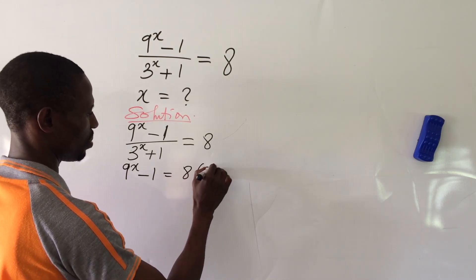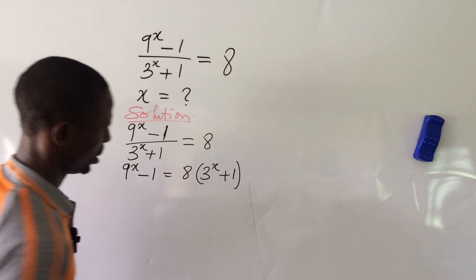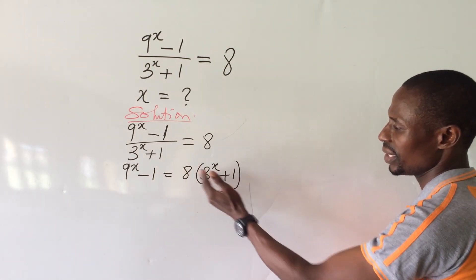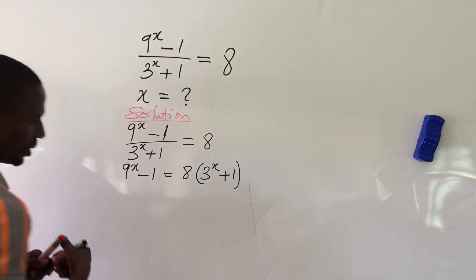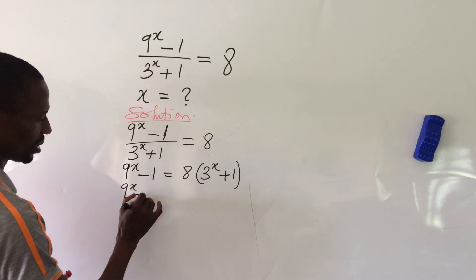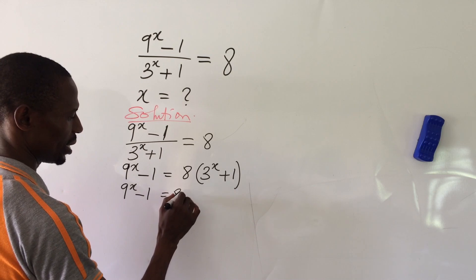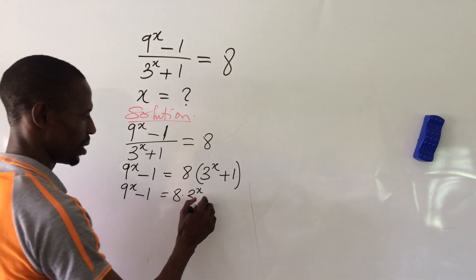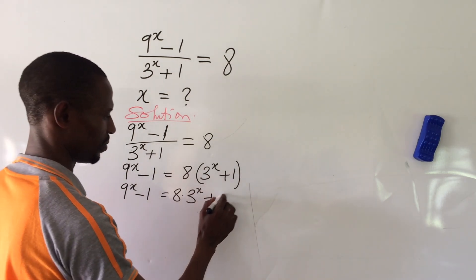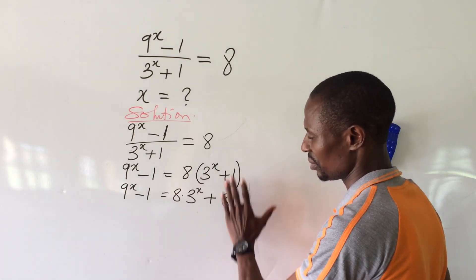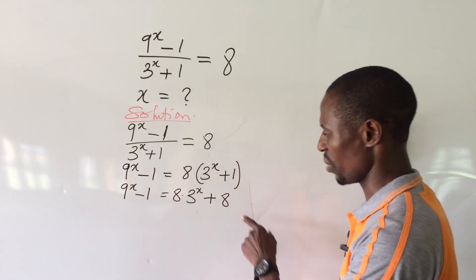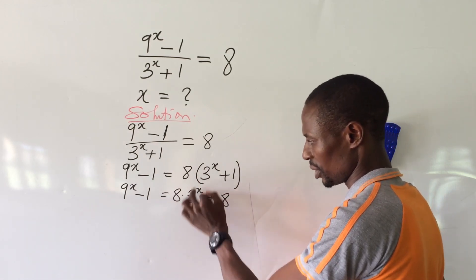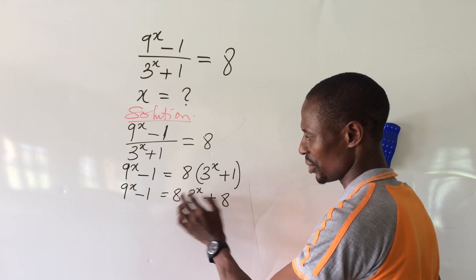Opening up the left-hand side, we have 9 to the power of x minus 1 equal to 8 · 3^x plus 8. Now let's take all terms to the left-hand side, since we have a constant term and a term with 3^x multiplied by 8. Sending everything to the left-hand side gives us: 9^x minus 8 · 3^x minus 9 = 0.